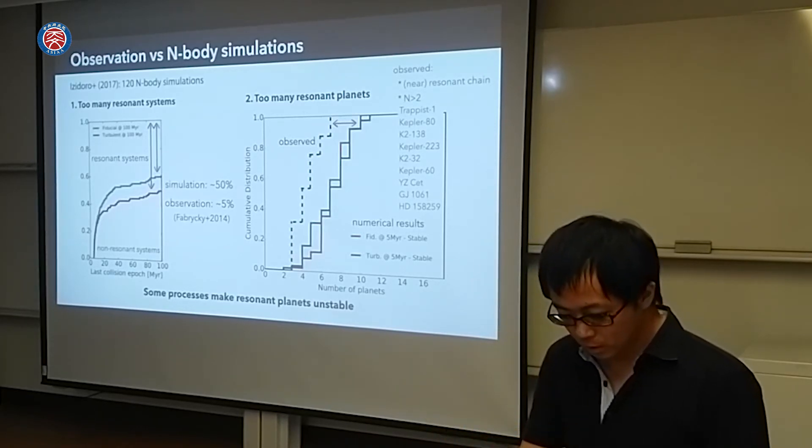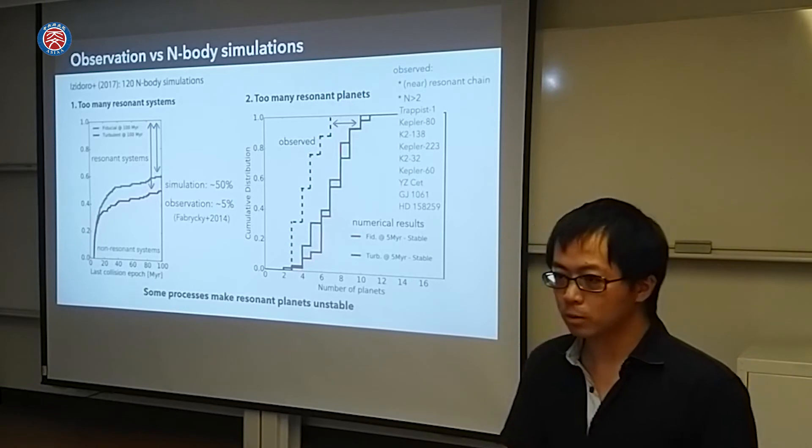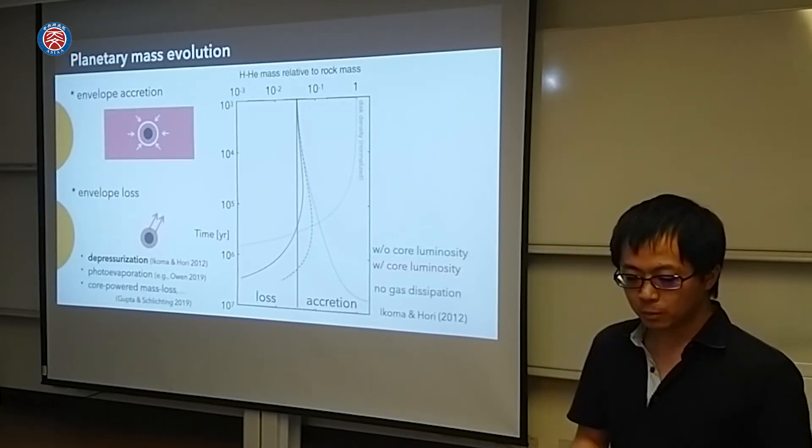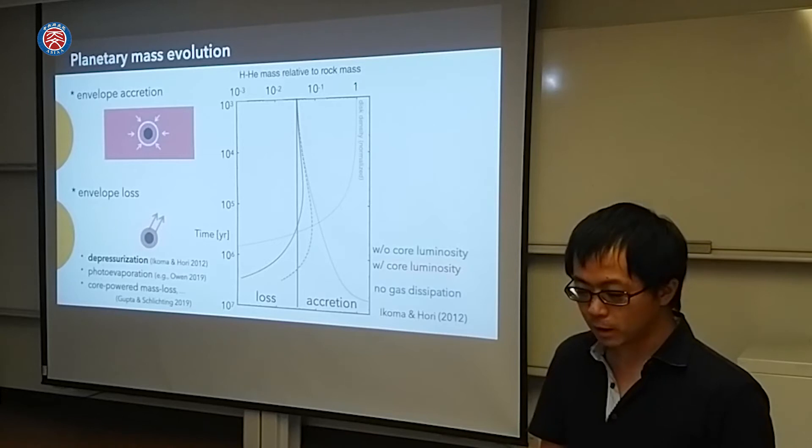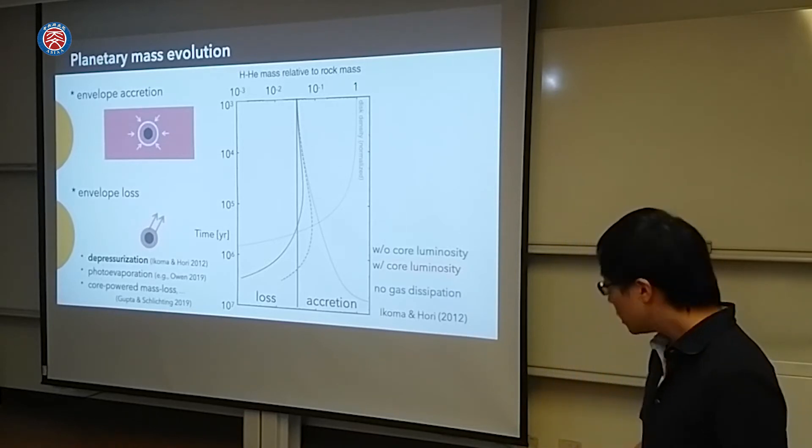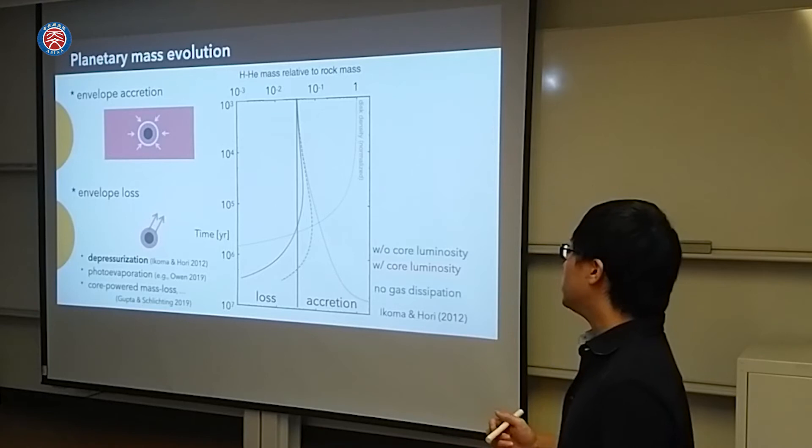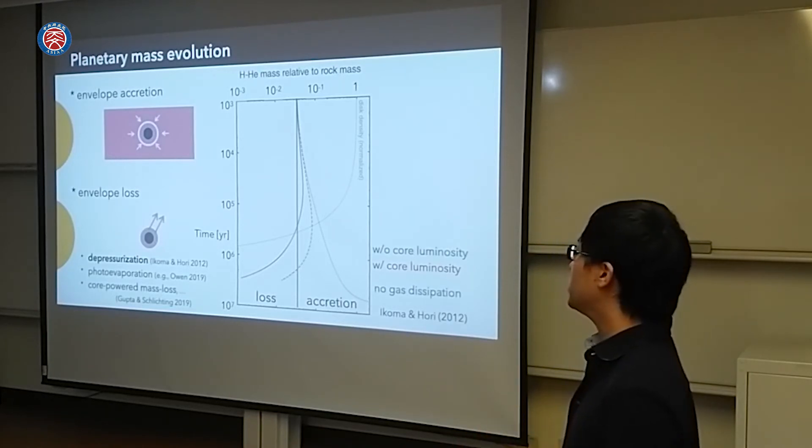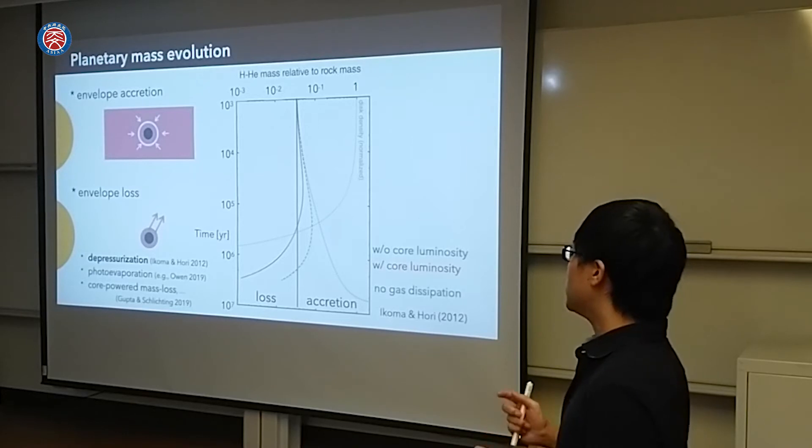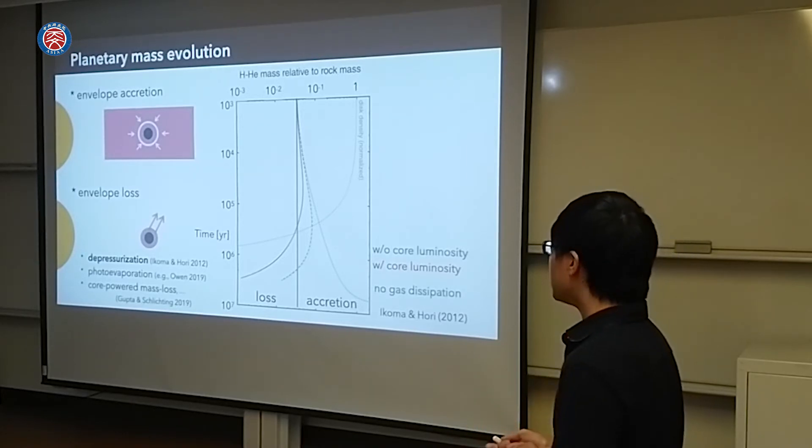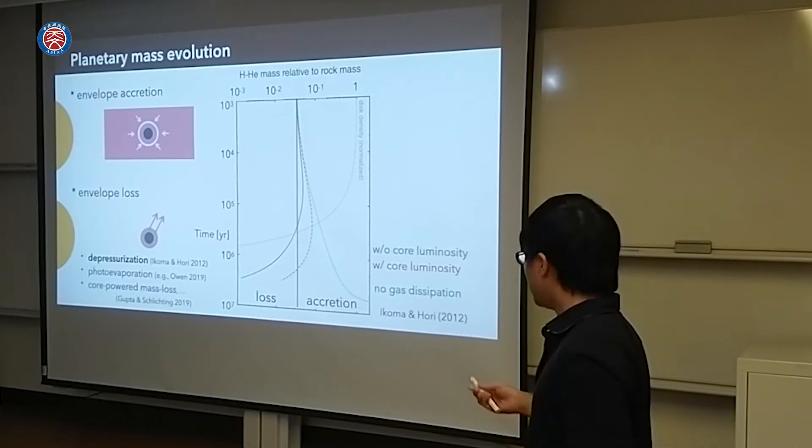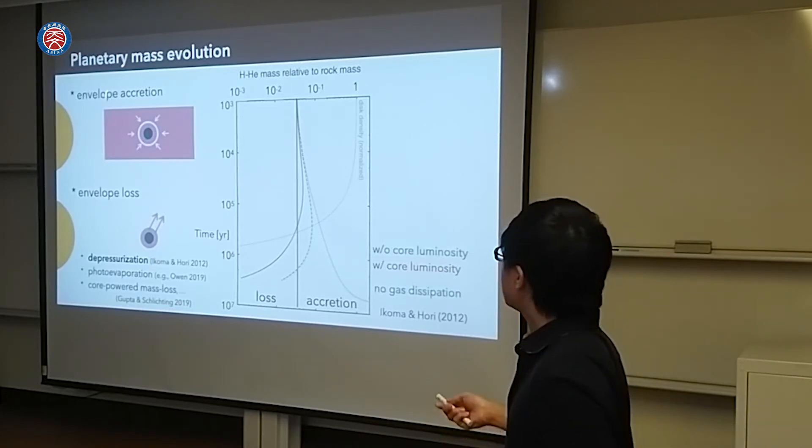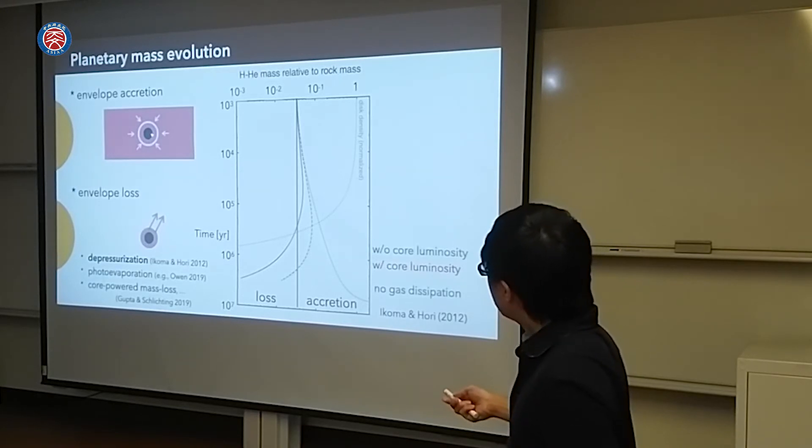So what makes resonant systems unstable? Here we focus on the planetary mass evolution, planetary envelope evolution. Planets are trapped in resonances in gas disks since their eccentricity and inclinations are damped. Then they go to the stable orbit. Planets are dropping. The resistance is the beast gas.